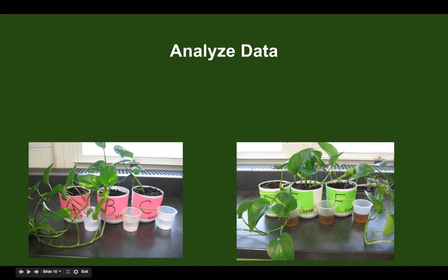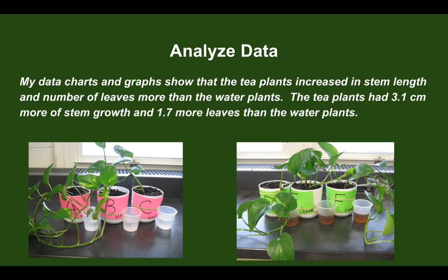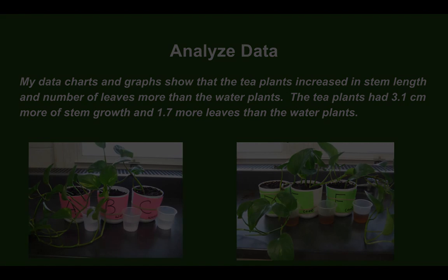Next, analyze your data — meaning, what does my data tell me? My data charts and graphs show that the tea plants increased in stem length and number of leaves more than the water plants. The tea plants had 3.1 centimeters more stem growth and 1.7 more leaves than the water plants.